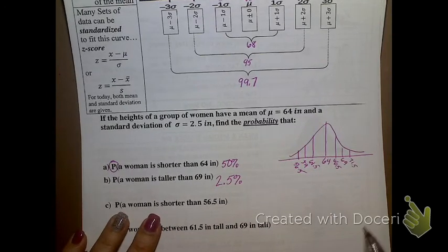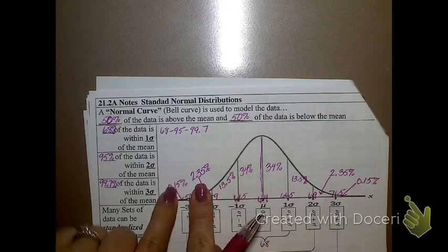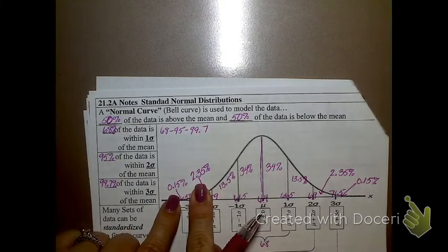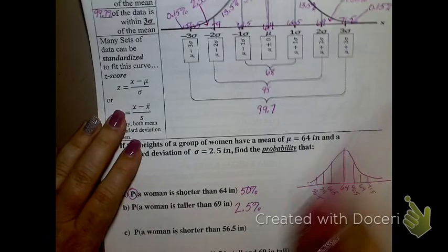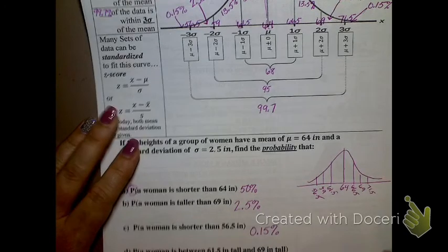What's the probability that a woman is shorter than 56.5 inches? 56.5. Shorter than would be to the left. The only thing to the left is 0.15%.